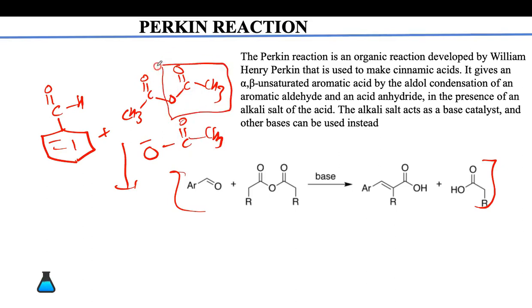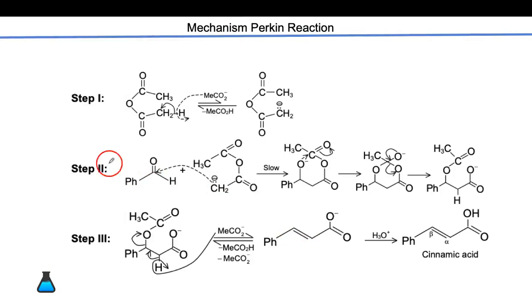So this base, anhydride, and benzaldehyde will give cinnamic acid. This reaction is known as Perkin. Now let's discuss the mechanism of Perkin reaction.